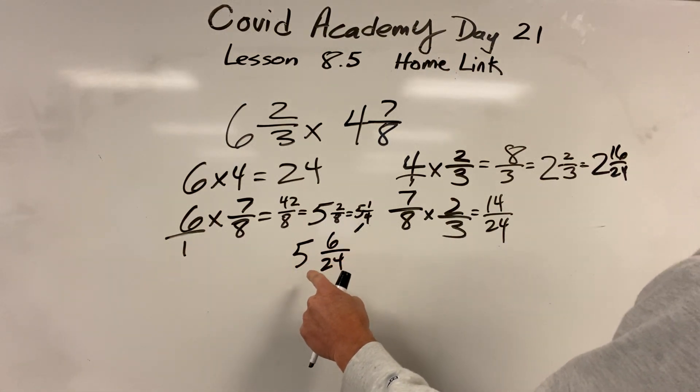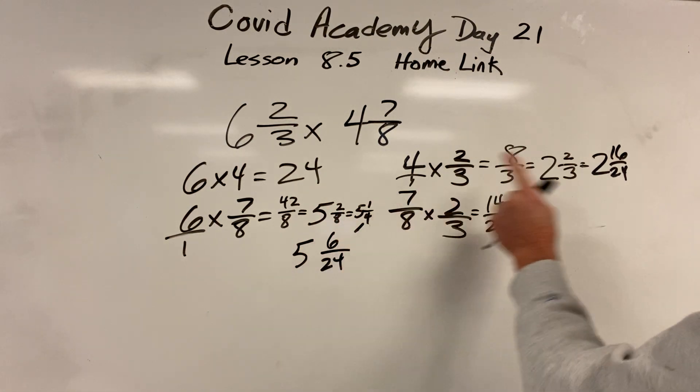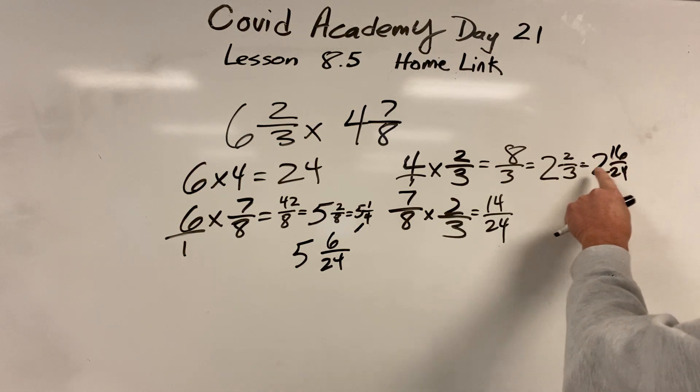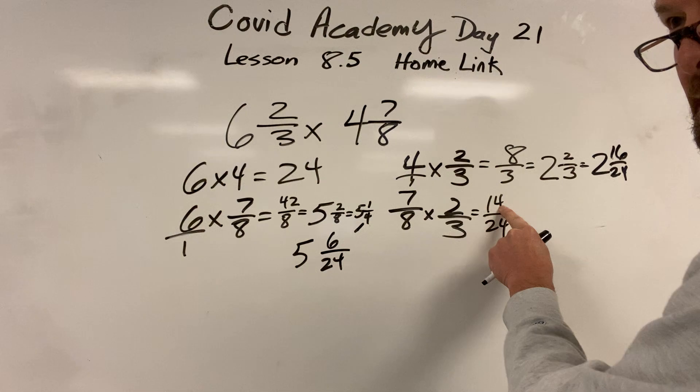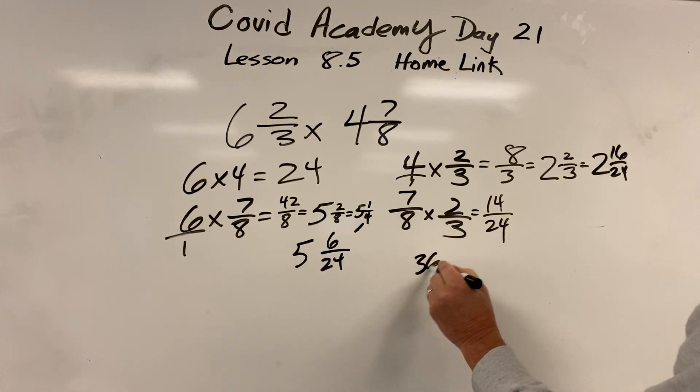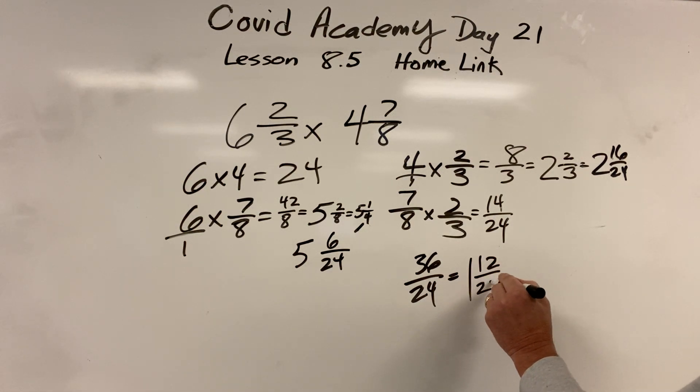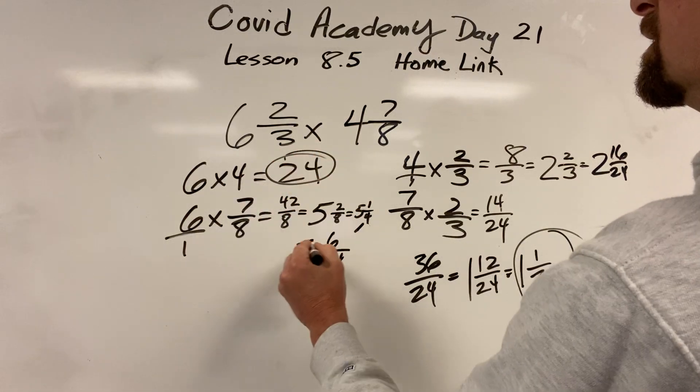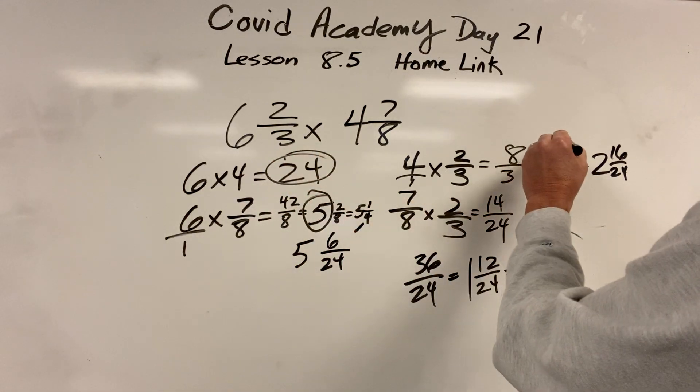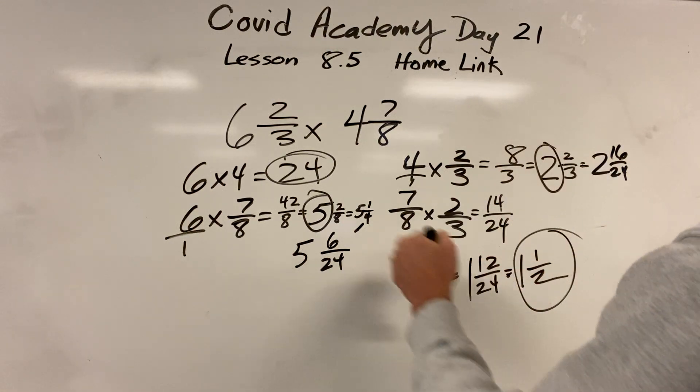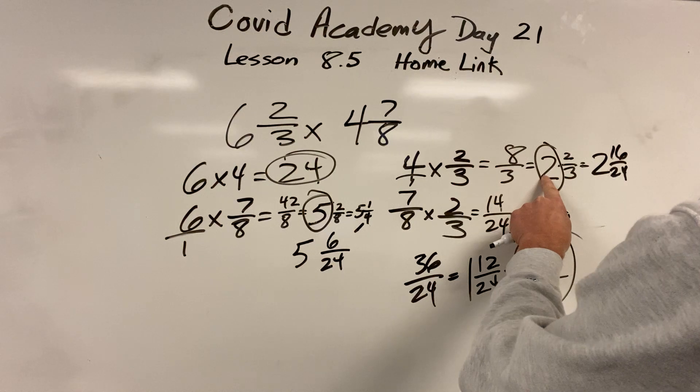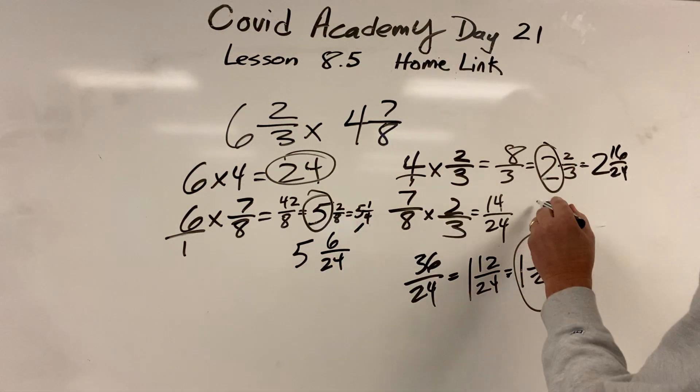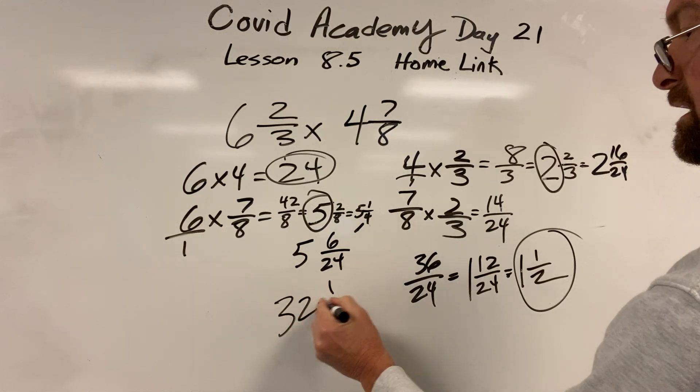Now I can put everything together. So I've got, let's just do the fraction parts. Six twenty-fourths plus 16 of them, that's 22 twenty-fourths. 22 plus 14 is 36 twenty-fourths, which equals 1 and 12 twenty-fourths. Yes, you're right. That's one and a half. One and a half. Now let's do the whole number parts. Twenty-four, five, and two. Twenty-four plus five is 29, plus two more is 31. Thirty-one plus one and a half is 32 and a half.